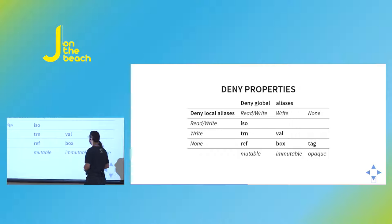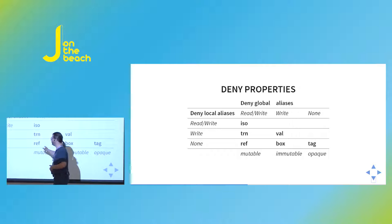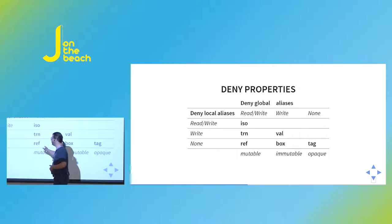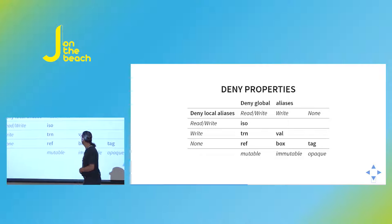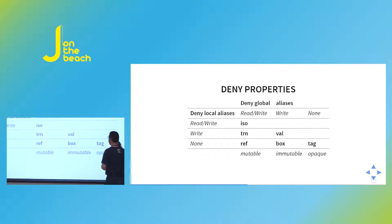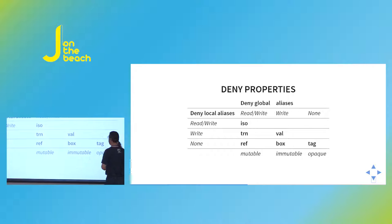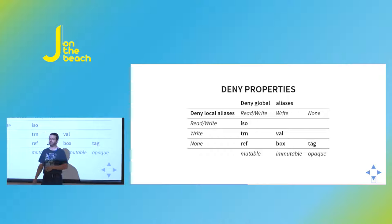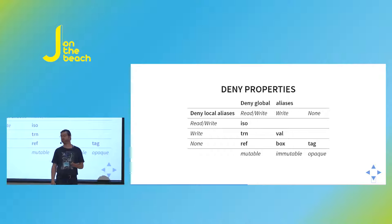Reference capabilities form a matrix of properties. A reference type doesn't deny global or local read/write access. A value type clearly denies write access, both locally and globally. A tag type is opaque — no read or write access. ISO is an isolated type — only one reference to it in the runtime system. That's what we use for message passing: because there's only one reference, it can be safely sent between actors.